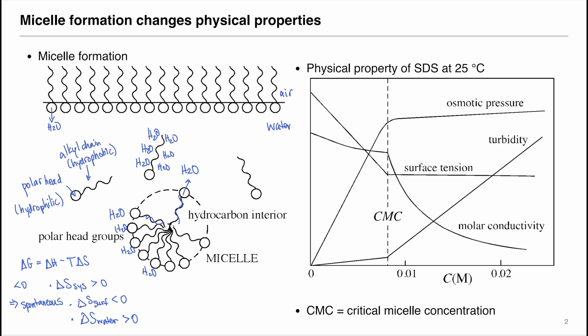For example, for sodium dodecyl sulfate or SDS at room temperature, we see that the surface tension decreases before CMC but remains rather constant after CMC. The osmotic pressure increases before CMC but the slope levels off after CMC. Also, the turbidity increases drastically after CMC.